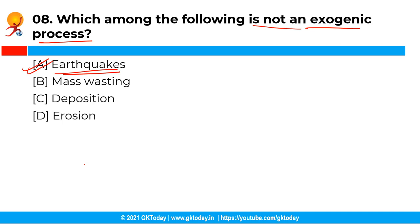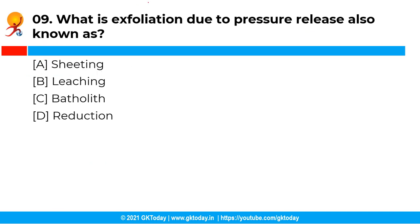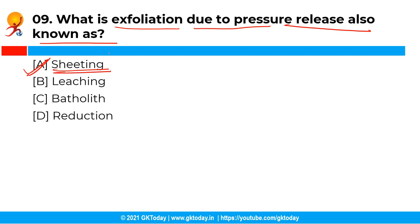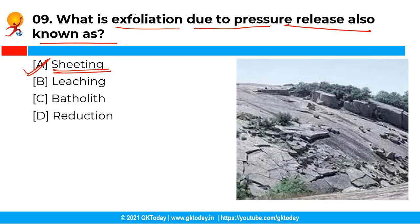The next question is: what is exfoliation due to pressure release also known as? The correct answer is option A, that is sheeting. Exfoliation is a process in which sheets of rocks break away and are exposed along the fractures. Exfoliation due to pressure release is also called sheeting.